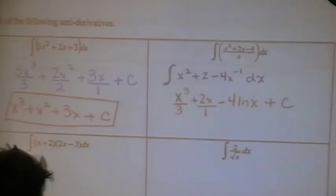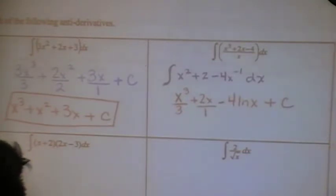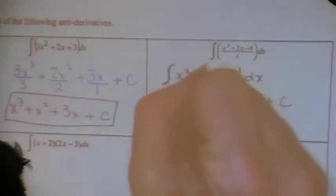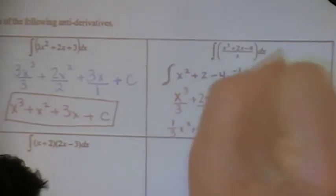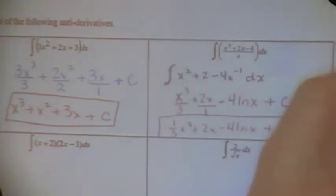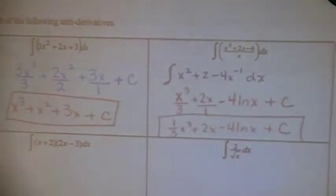If this was the AP exam, it would probably be written like this: one third X cubed plus two X minus four natural log X plus C. The only thing that can be confusing about this is when it's not power rule — for example, sine and cosine.